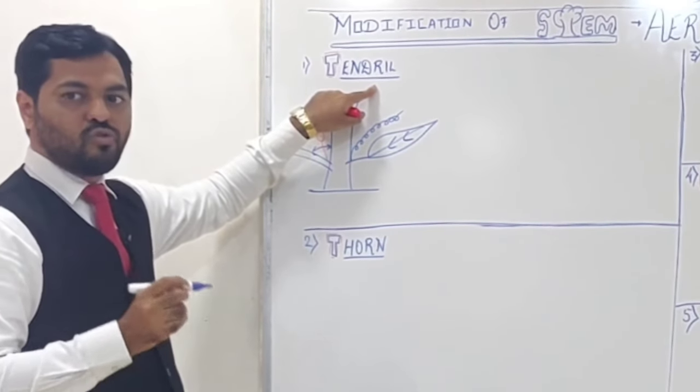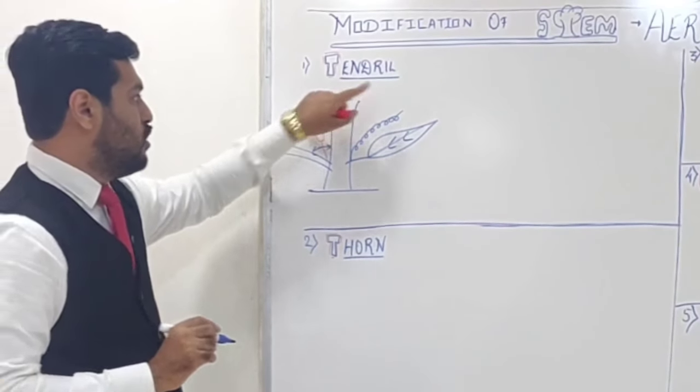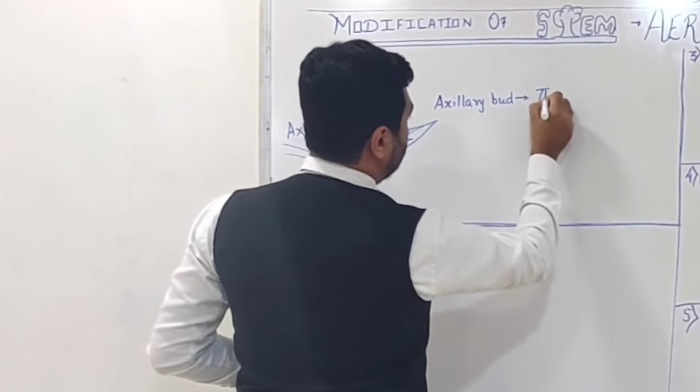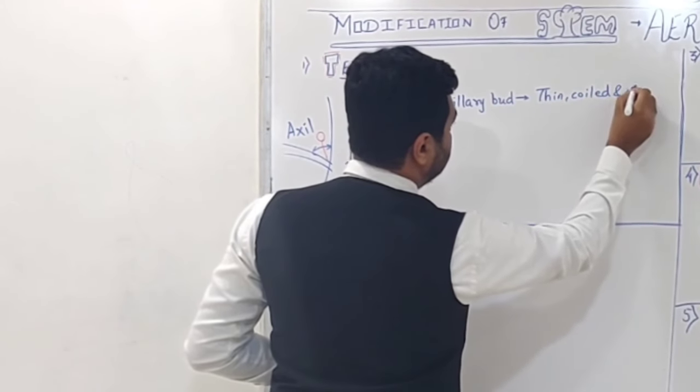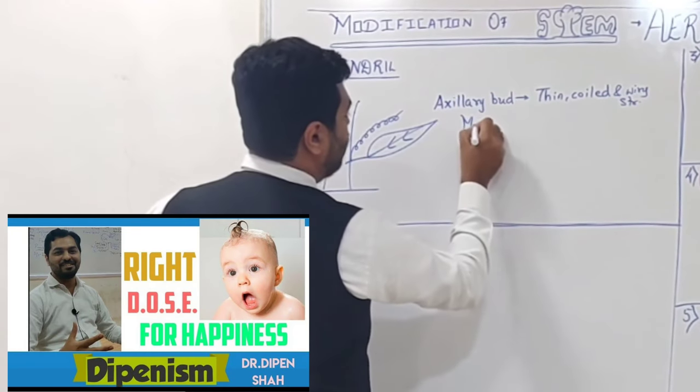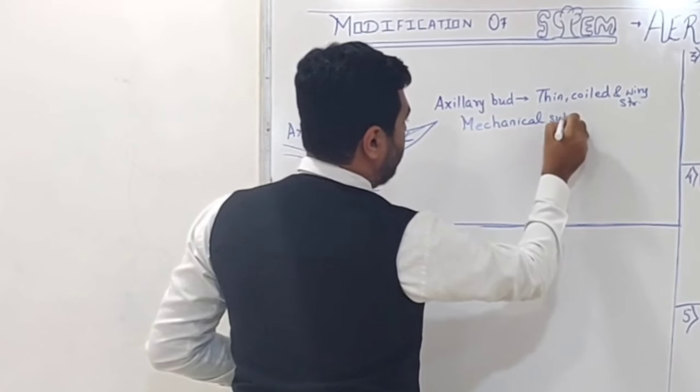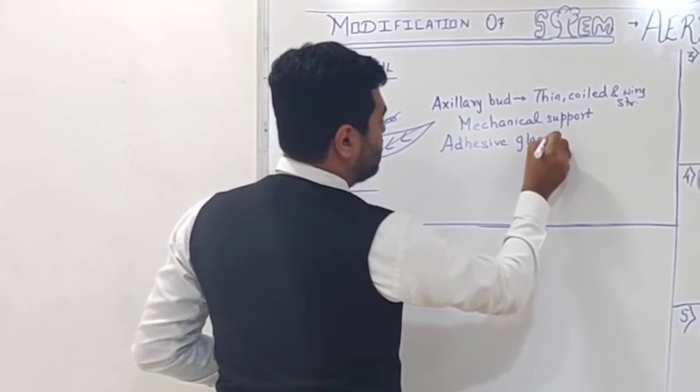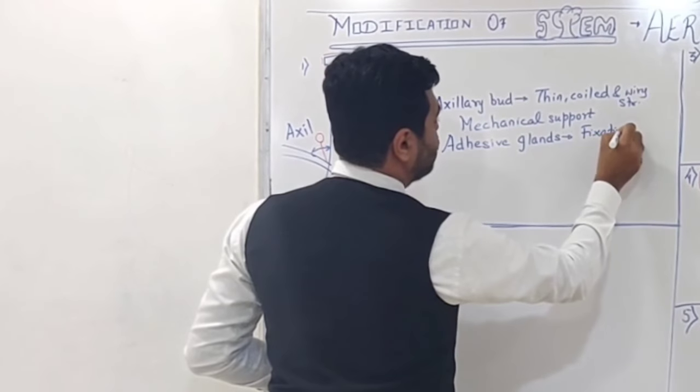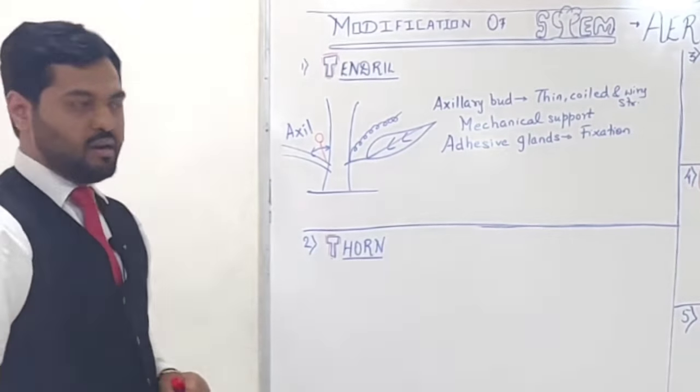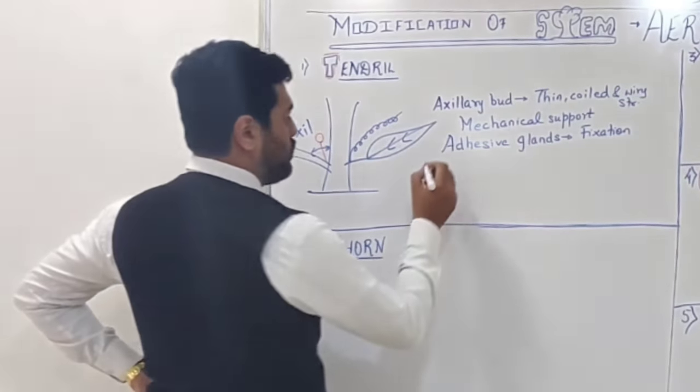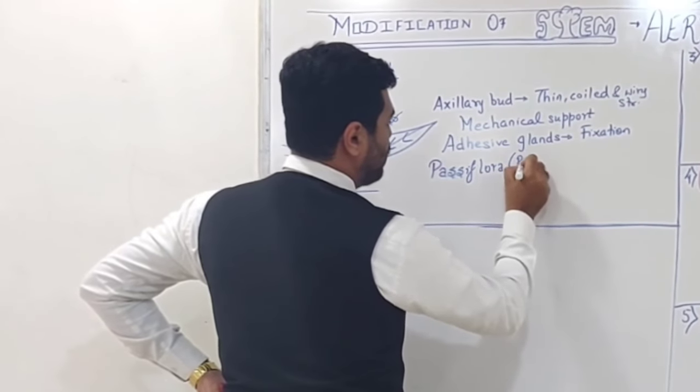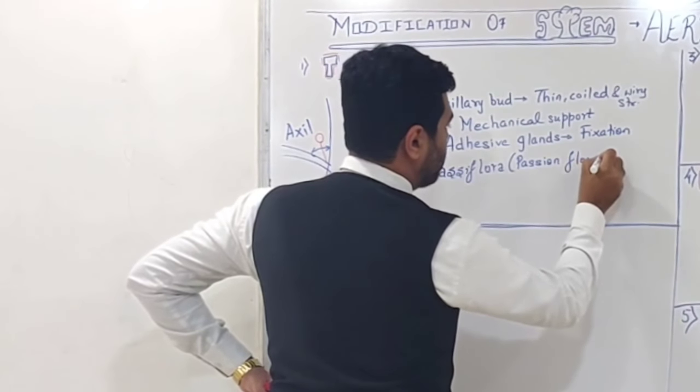It is a thin, coiled root-like structure. The axillary bud is modified into thin, coiled, and wiry structure. This wire provides mechanical support and has adhesive glands that release secretion to help with fixation and support. Tendril is observed in plants like Passiflora, known as passion flower.